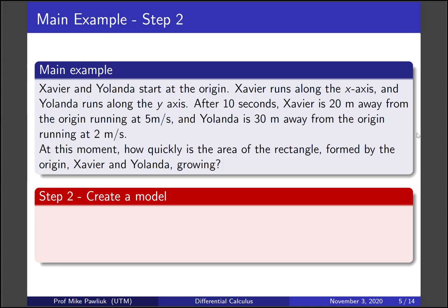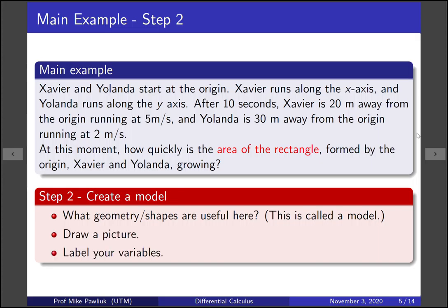The second step is to create a model of the situation. What geometry or shapes are useful here? The shape that you use to describe a problem is called a model. If the problem is not geometric, you won't have a shape as your model, but oftentimes in first year calculus problems, there will be some geometry involved. In our question, this is going to be about areas of rectangles. Also, your model should involve drawing a picture and labeling your variables. So let's do that now. We'll use that information to actually make our model, and we'll label various things that are relevant, such as the position of Xavier and the position of Yolanda.